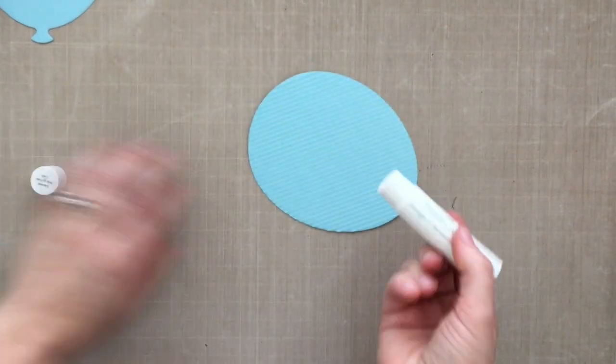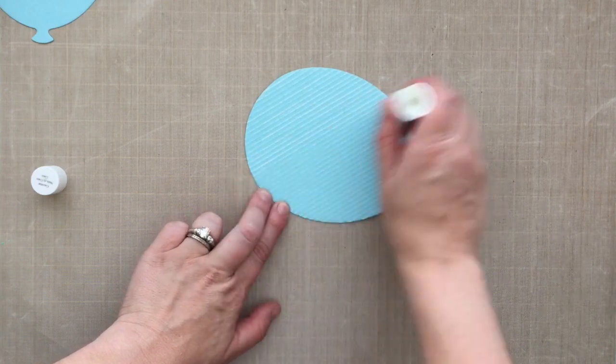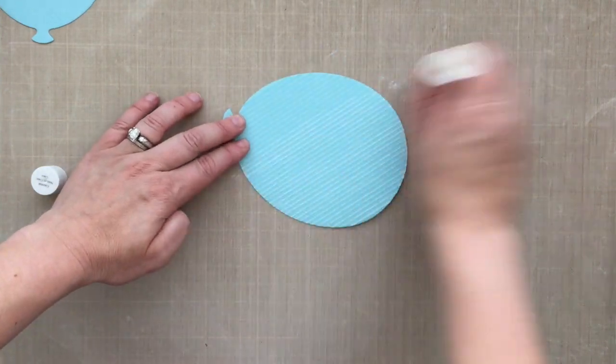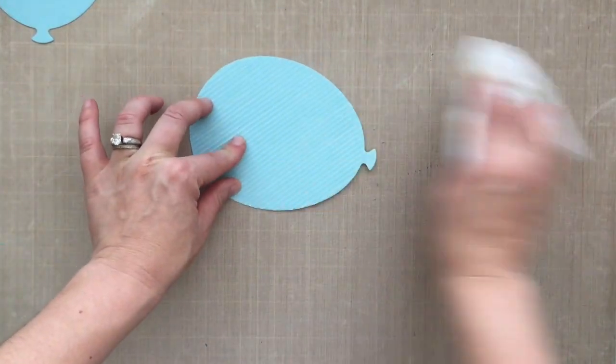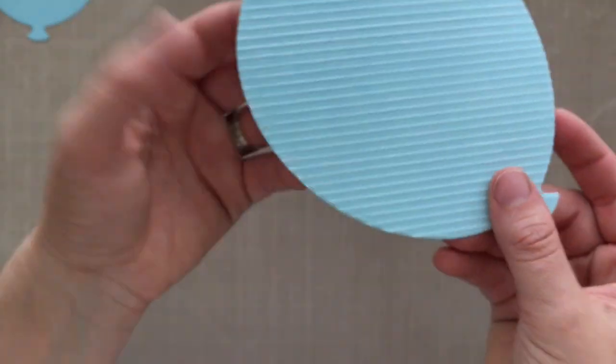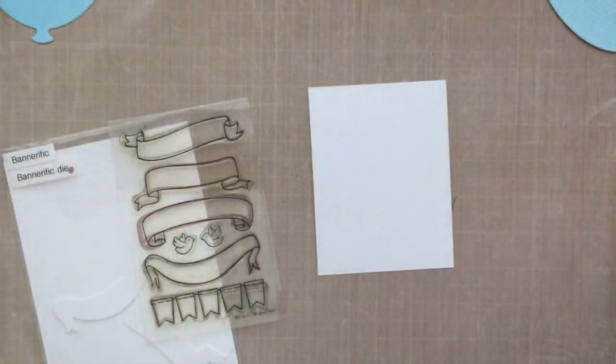To accentuate them even more and draw your eye and your attention to them, I'm taking a double scoop gelato in the color coconut and scribbling it on there. That's laying down some of that white over those embossed lines and really draws your eye to it a little bit more. Just something fun to do.